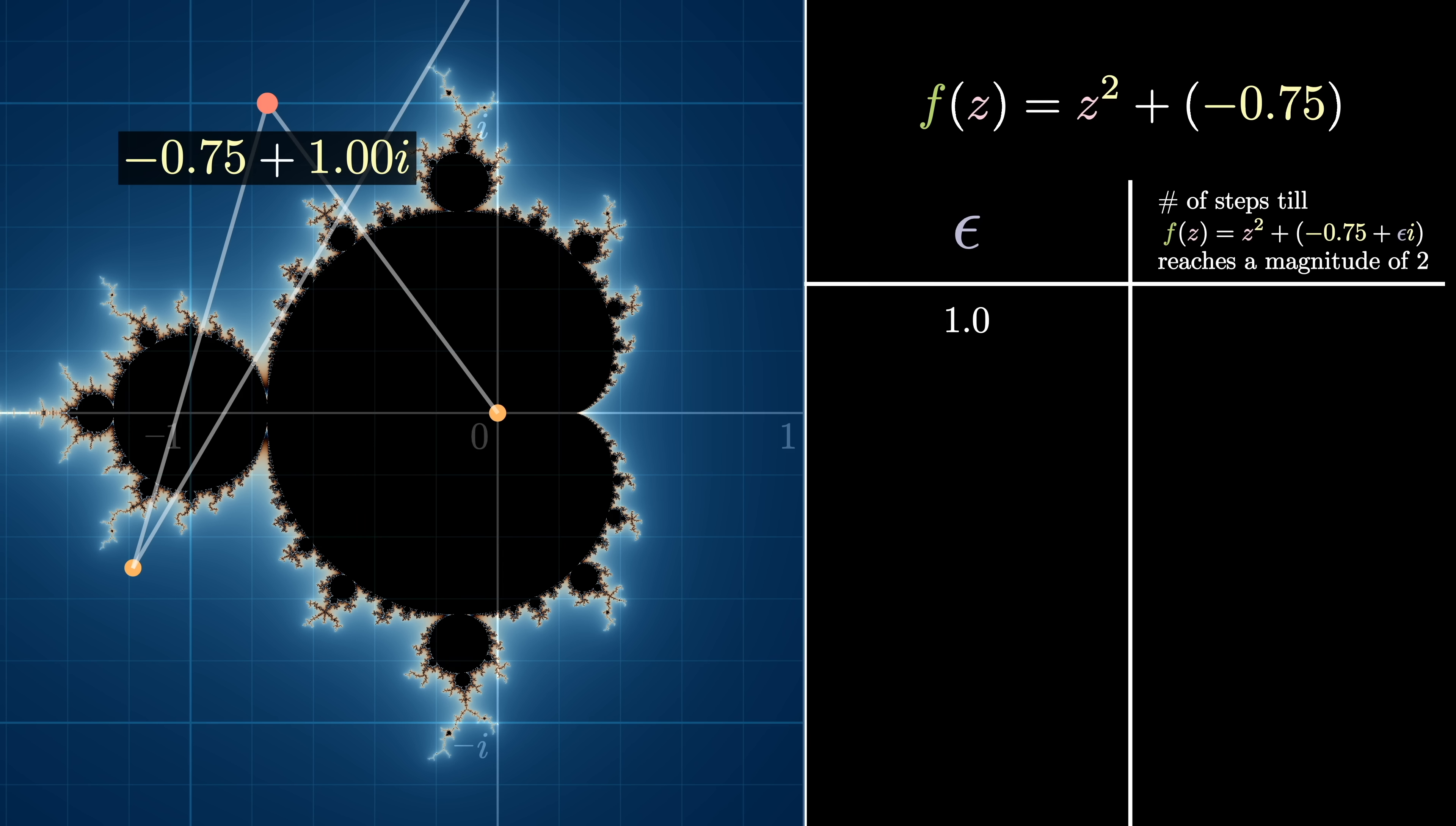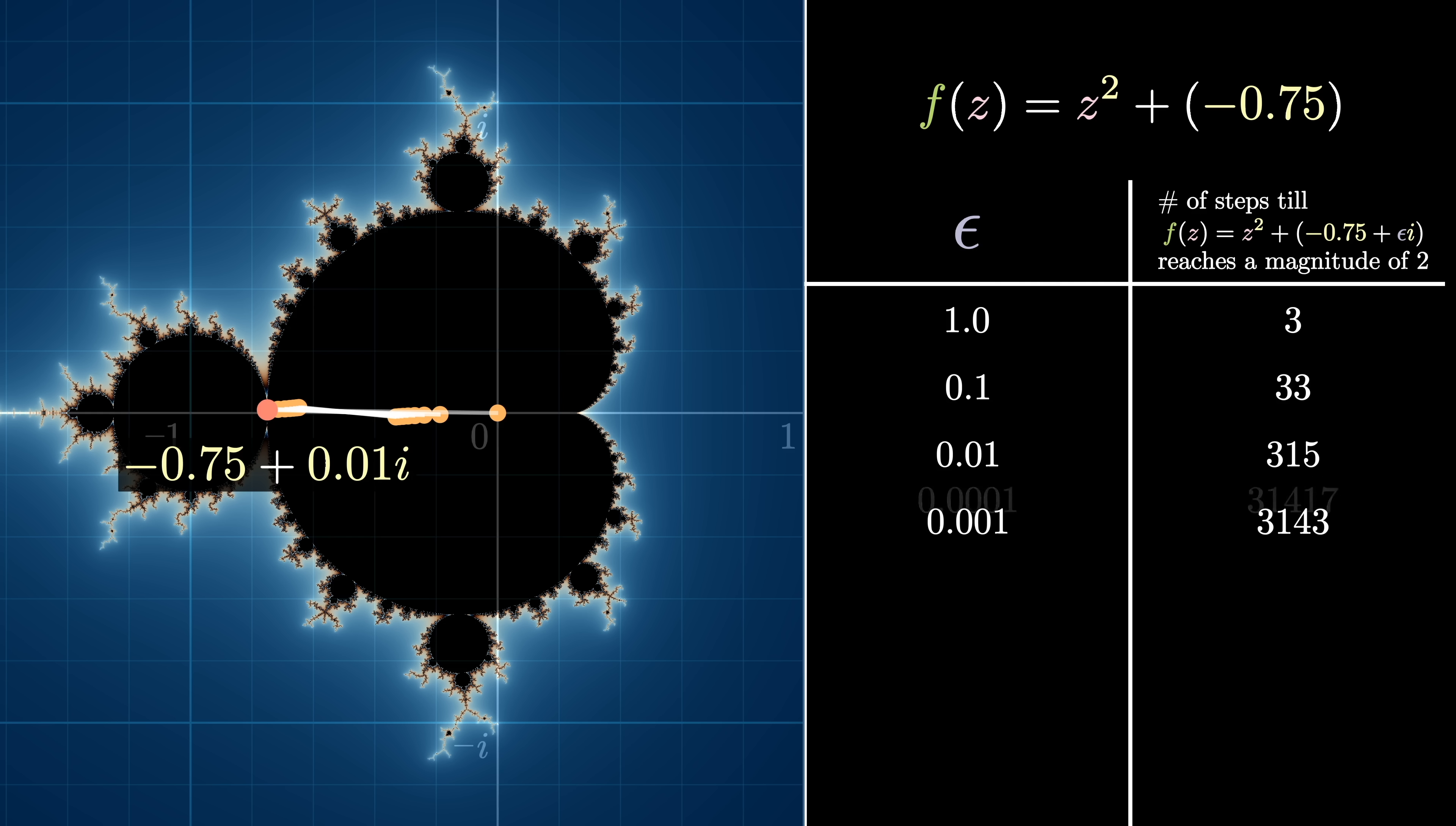And there you have it! As epsilon tends to 0, the total number of steps approaches pi over root epsilon. The root epsilon instead of epsilon is the reason why around the point 0.25, pi appears at powers of 100 and not 10. And also, since pi over root epsilon is the limiting behavior here, we can only expect the number of steps to approximate pi. If we look at some values here, you can see some of the last digits seem to be off.